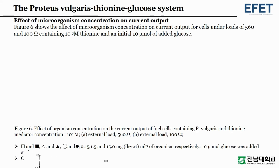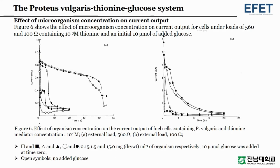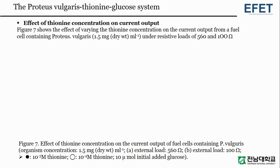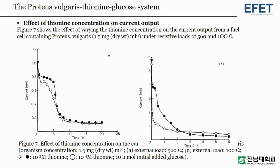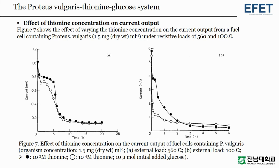The effect of microorganism concentration on current output is shown: we can see the effect of organism concentration on the current output of fuel cells containing Proteus vulgaris and thionine. Figure 7 shows the effect of varying the thionine concentration on the current output from a fuel cell containing Proteus vulgaris under resistive loads of 560 and 100 ohm.